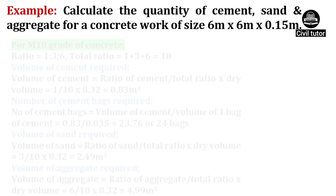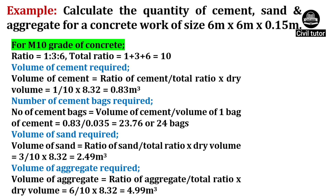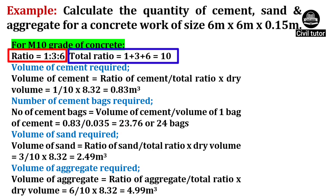Now let's do the calculations for M10 grade of concrete. As we know, the ratio of cement, sand and aggregate is taken as 1:3:6 in case of M10 grade. Hence the total ratio will be equal to 1 + 3 + 6, which equals 10.